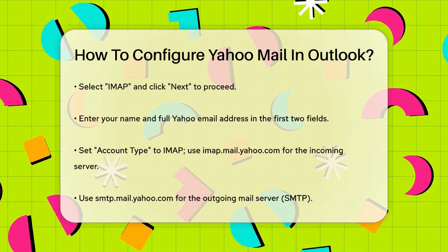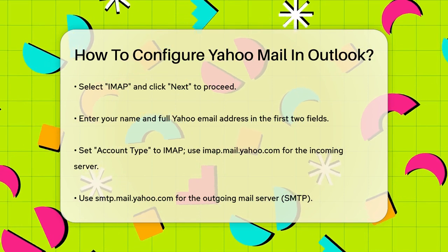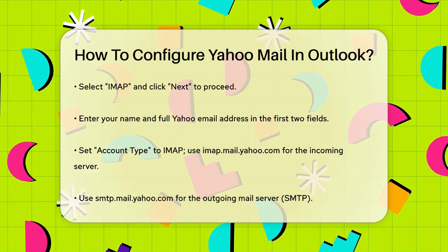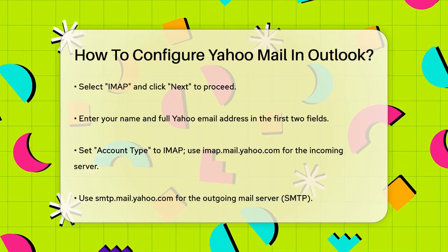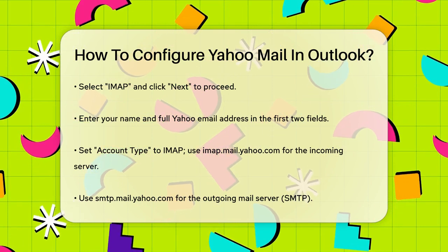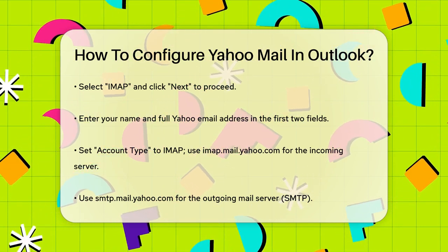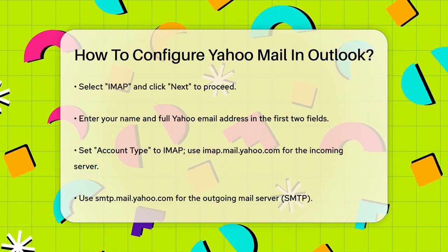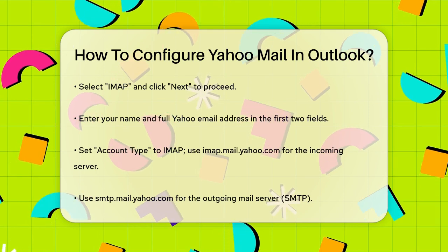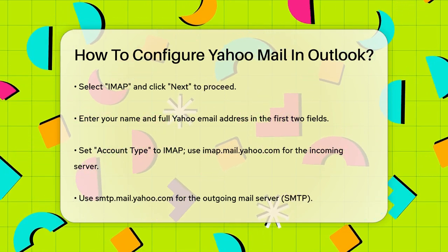Now you'll need to enter some specific details. Your name and full Yahoo email address go in the first two fields. For the account type, select IMAP. The incoming mail server should be imap.mail.yahoo.com and the outgoing mail server (SMTP) should be smtp.mail.yahoo.com.